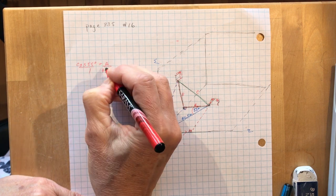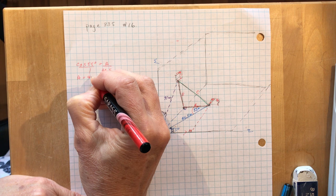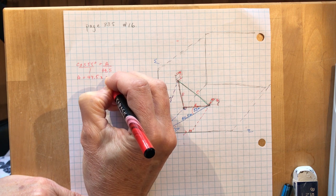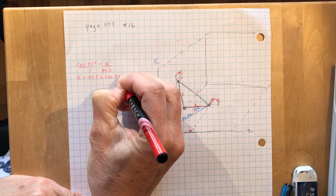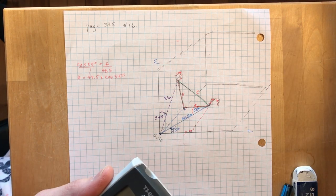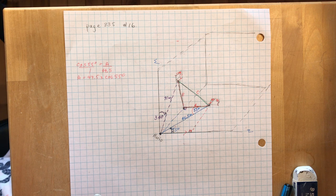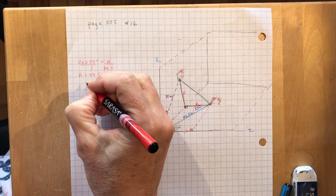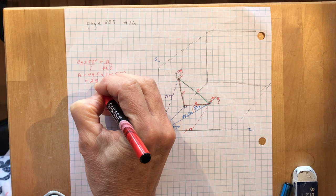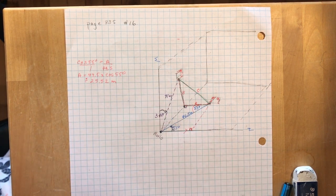So that means A is 44.5 times the cos of 55 degrees. So let's do that here on my calculator. 44.5 times the cos of 55 gives me 25, 25.52 approximately, meters.